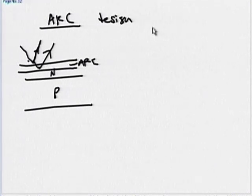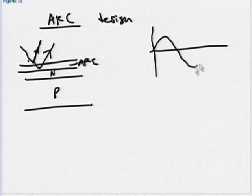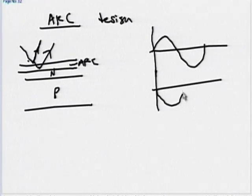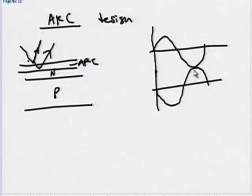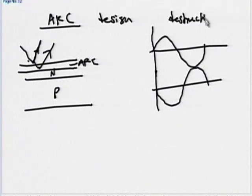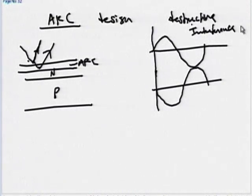Destructive interference occurs when you put two waves 180 degrees out of phase. The wave reflected from the top of the ARC and the wave reflected from the N surface — if these two waves have a 180-degree phase shift, you create destructive interference. To create this phase shift, you have to create a specific path length difference.